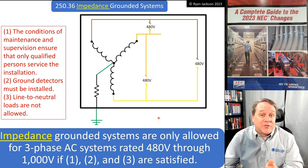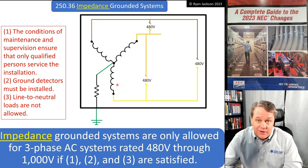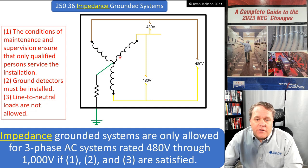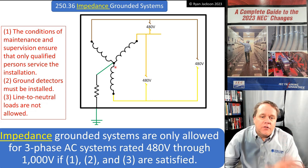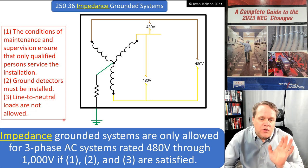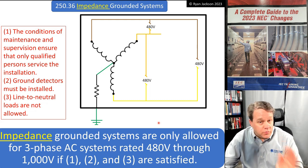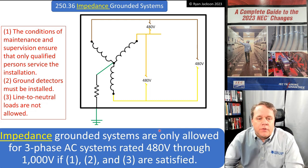An impedance grounded system is a Y-connected system - it's almost always going to be 480 volts or higher voltage. It is a Y-connected system and it does not have a neutral conductor. Section 250.36 says you can use an impedance grounded system for three-phase systems rated 480 volts through 1000 volts or more, as long as conditions one, two, and three are complied with.